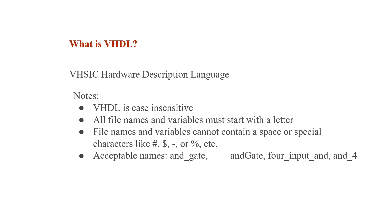VHDL is case-insensitive, meaning uppercase or lowercase letters do not matter — they're the same. All file names in VHDL must start with a letter. An acceptable name would be, for example, lab_one. There shouldn't be any space or special characters in a file name or a variable name in VHDL unless it's the underscore. So if you want to separate two words in VHDL, you can say and_gate, or you can change the case of the second word, like andGate. Keep in mind that VHDL is case-insensitive, so the case doesn't matter.